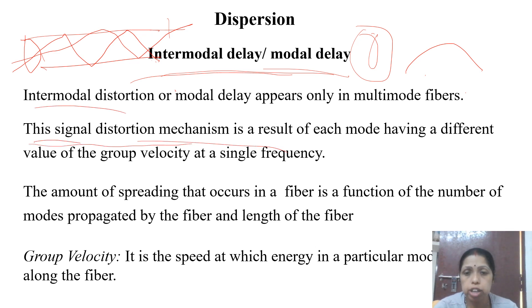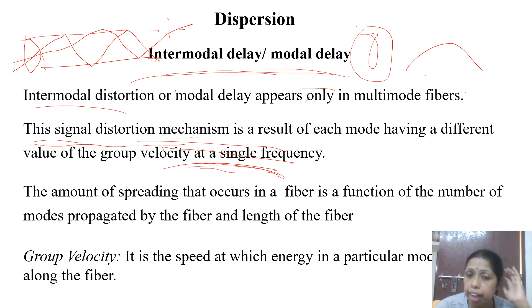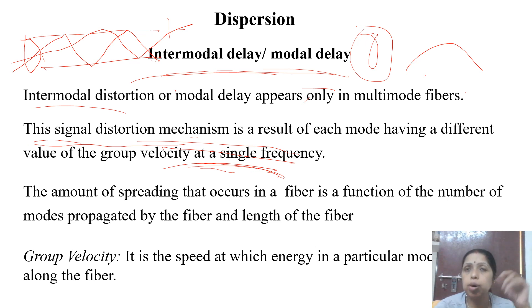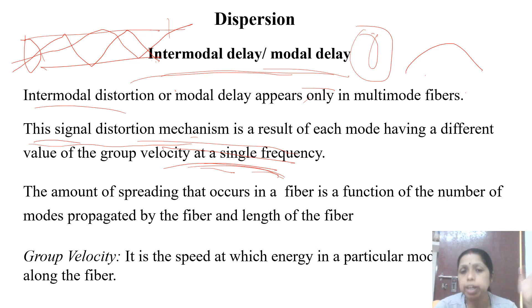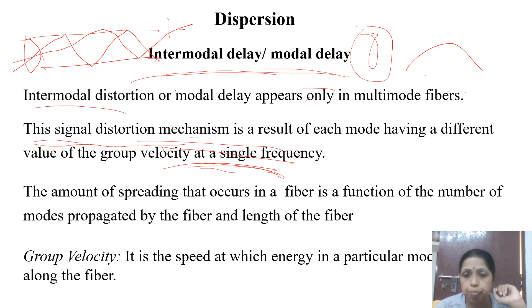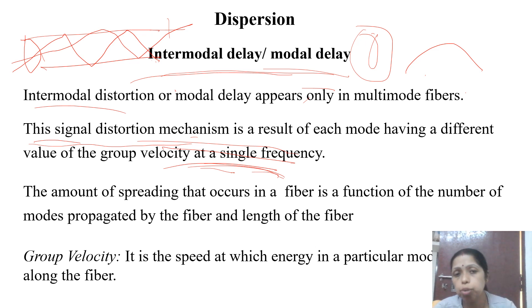Modal delay is the time difference between two rays propagating through the fiber. One ray reaches the other end in a shorter time; another ray takes a longer time. The difference between these two times is called modal delay. The amount of pulse broadening can be calculated from modal delay. If more rays are propagating, more pulse broadening occurs. If the fiber length is also large, there will be larger pulse broadening or dispersion.